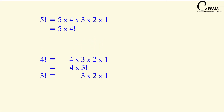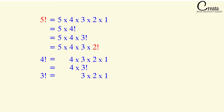Similarly, 5 factorial can be rewritten as 5 × 4 × 3!, and also as 5 × 4 × 3 × 2!. We are just rearranging the numbers and playing with the factorial representation so that you understand it in more detail.